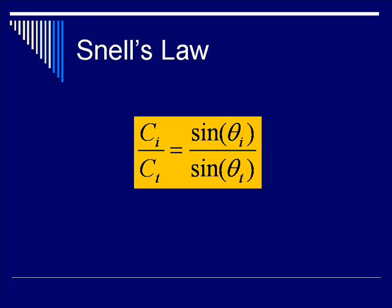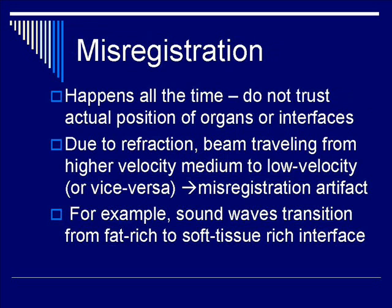Quickly flashing Snell's Law, let's go to the first subcategory of refractive errors, which is misregistration. You may be surprised that this happens all the time — the image that you see is not what it really is. You cannot actually trust the actual position of the organs and the interfaces because refraction will cause bending of beams and will relocate the actual interface.